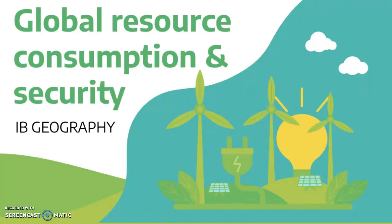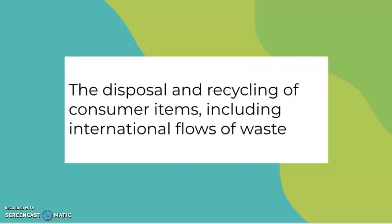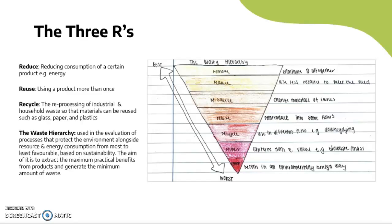This video covers global resource consumption and security. The syllabus point is the disposal and recycling of consumer items, including international flows of waste. The three R's are: reduce, which is reducing consumption of a certain product such as energy; reuse, which is using a product more than once; and recycle, which is the reprocessing of industrial and household waste so that materials such as glass, paper, and plastics can be reused.